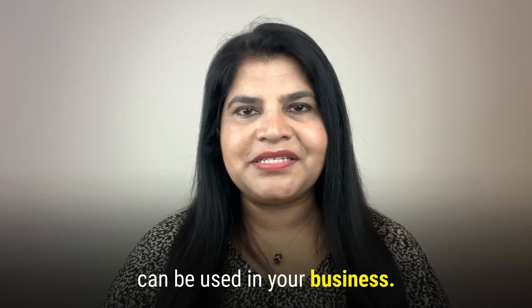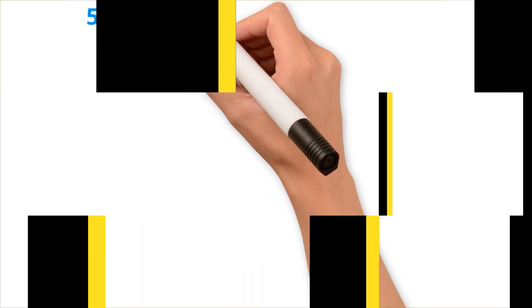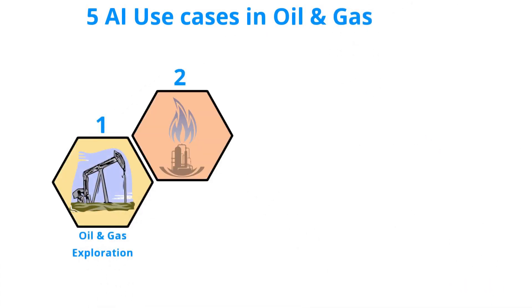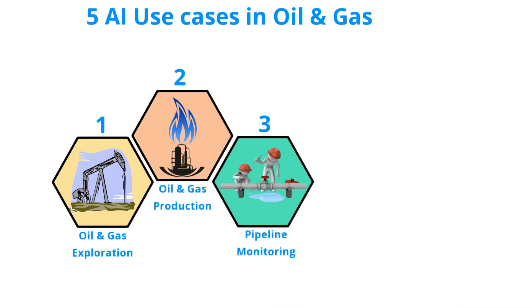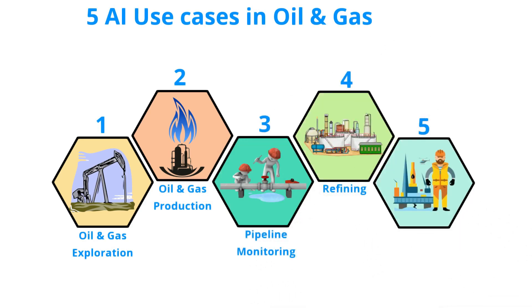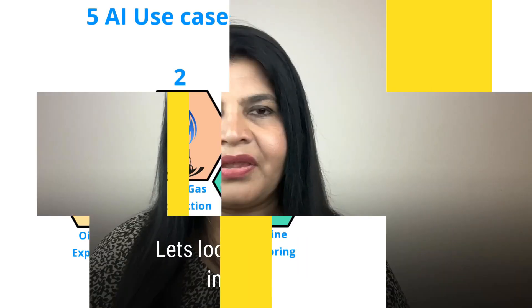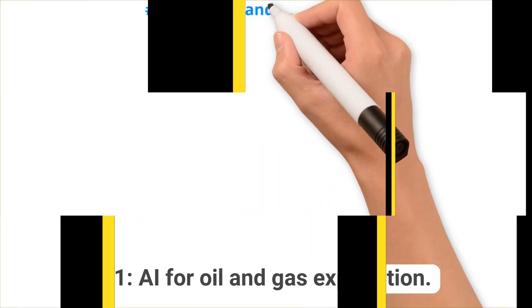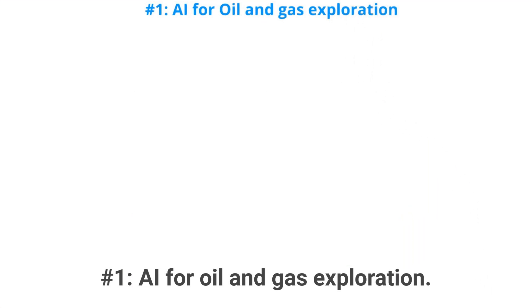Five use cases that we'll explore here include oil and gas exploration, oil and gas production, pipeline monitoring, refining, and improved safety. Let's look at each of these in a little detail. Number one: AI for oil and gas exploration.